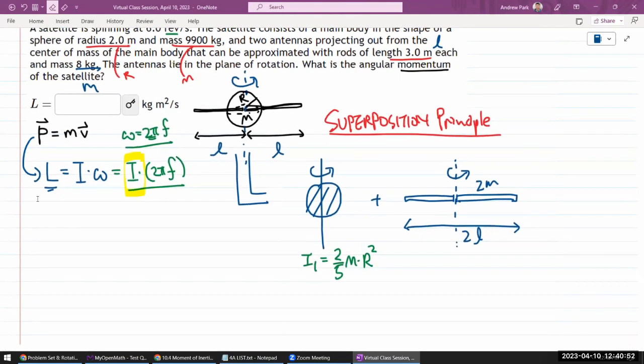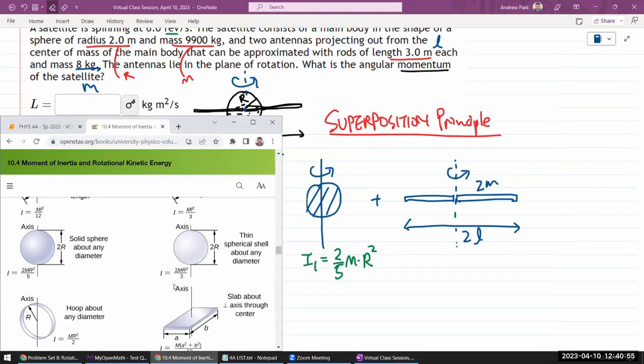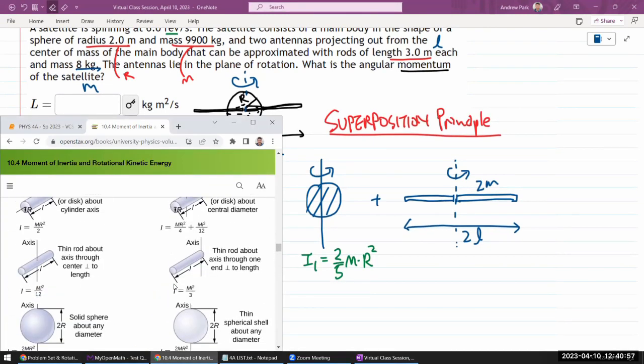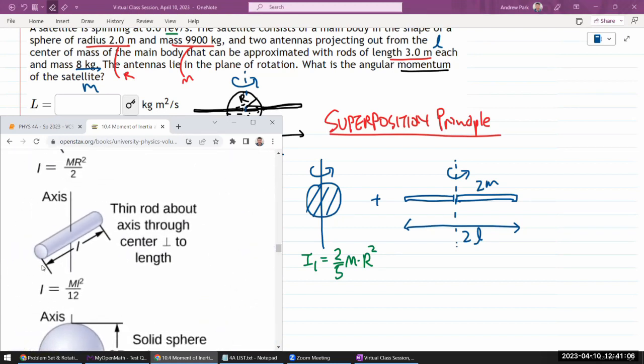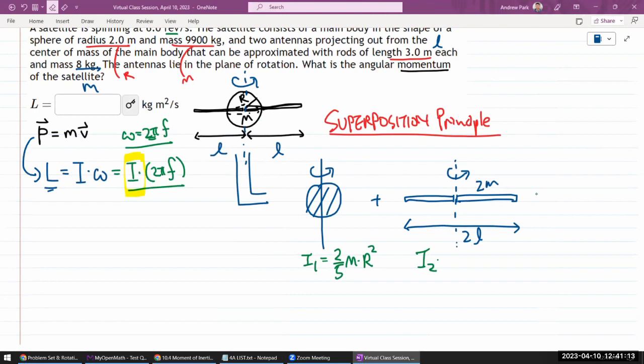And the rotational inertia of a rod about its center would be—this one: thin rod, axis through the center perpendicular to length. Now here I'll have to be careful because it's (1/12)ml where l is the length of the whole thing. So I have to be careful to plug in 2l for that. So I_2 is 1/12 times the mass of the thing, lowercase m, times its length 2l squared. So total rotational inertia through superposition principle will be the sum of these two rotational inertias.